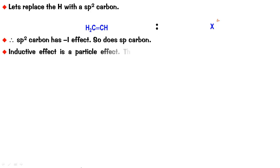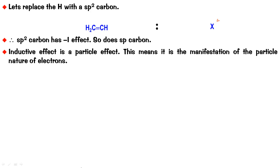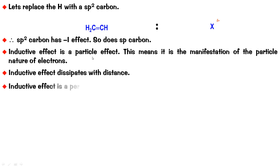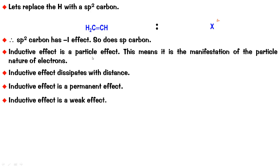Another important property: inductive effect is a particle effect. It is a manifestation of the particle nature of electrons — we are talking about an electron being localized at a particular position, moved here or there, with charges increasing or decreasing. When we localize something, that is particle nature at play. In contrast, resonance effect — coming in the next video — is the manifestation of the wave nature of an electron. Inductive effect also dissipates with distance, and it is a permanent effect that exists in a molecule from the moment of its formation. It is a weak effect because the actual movements of sigma bonded electrons are very small.